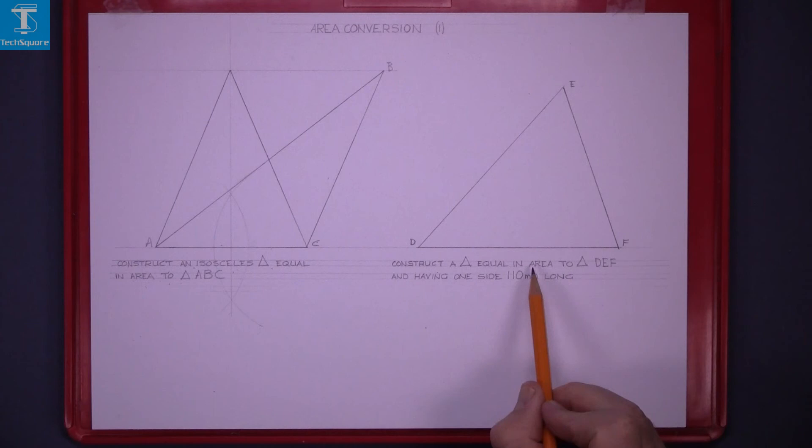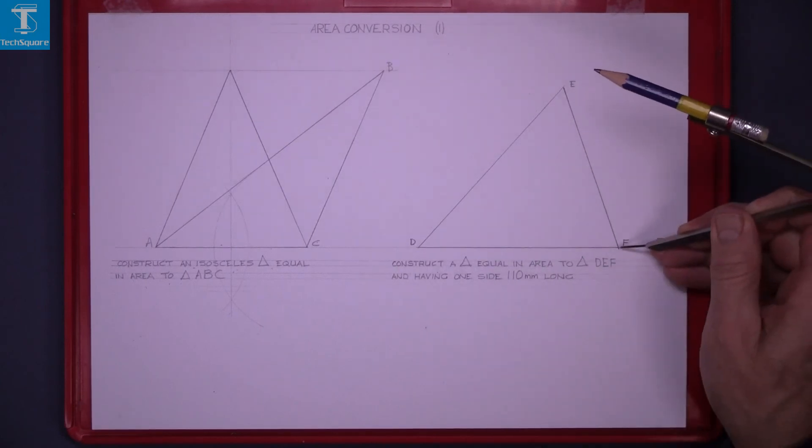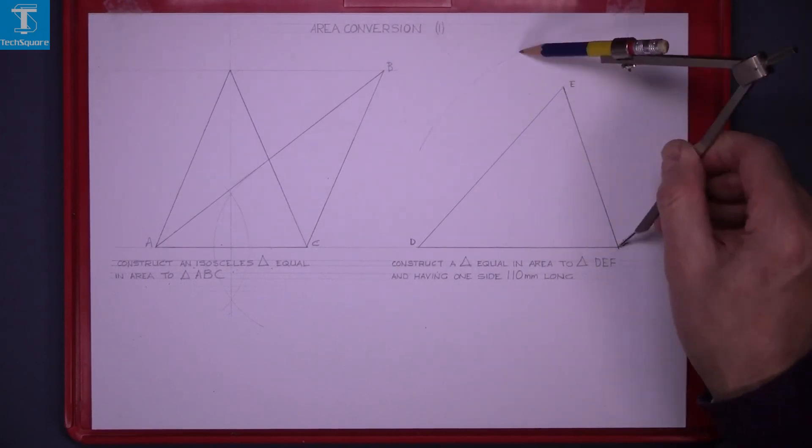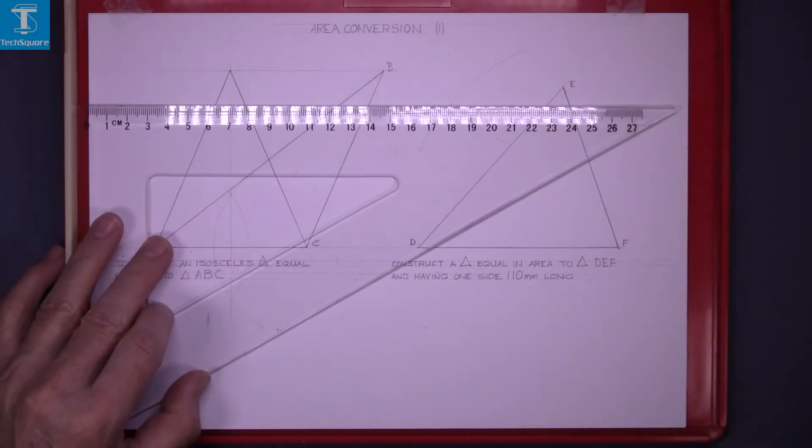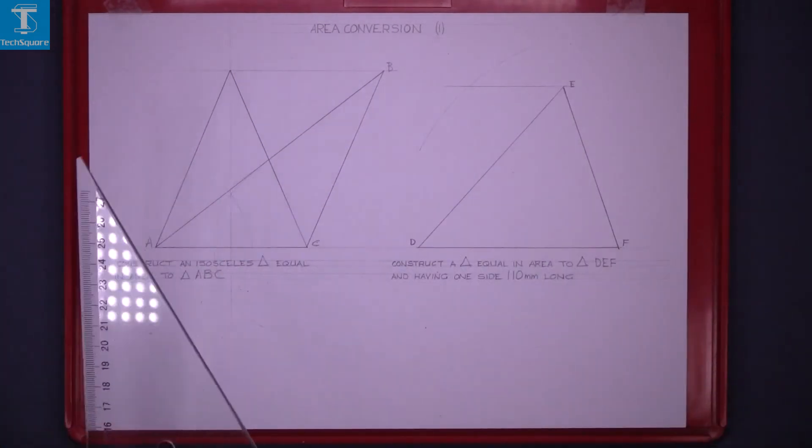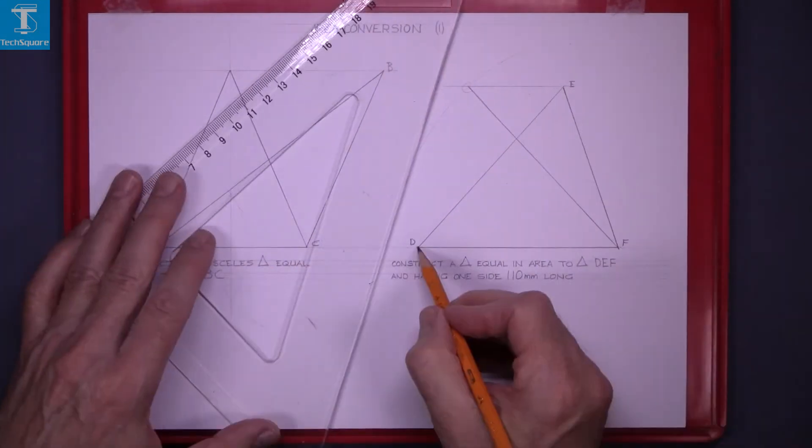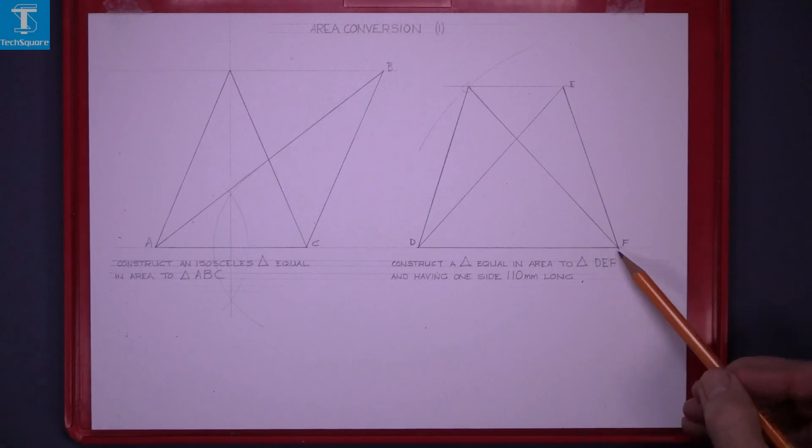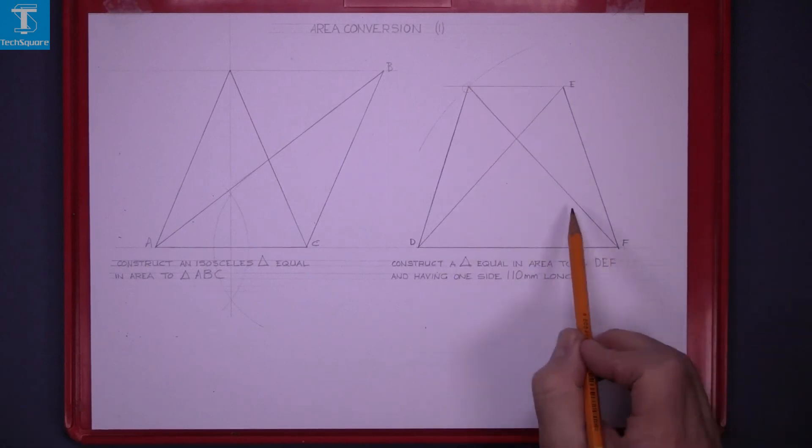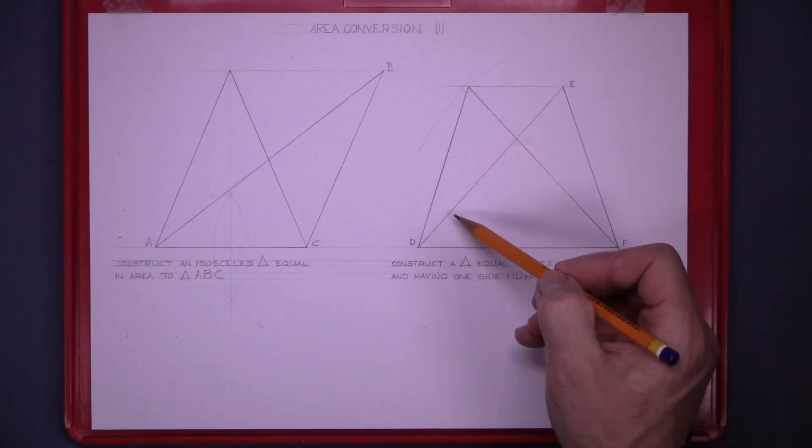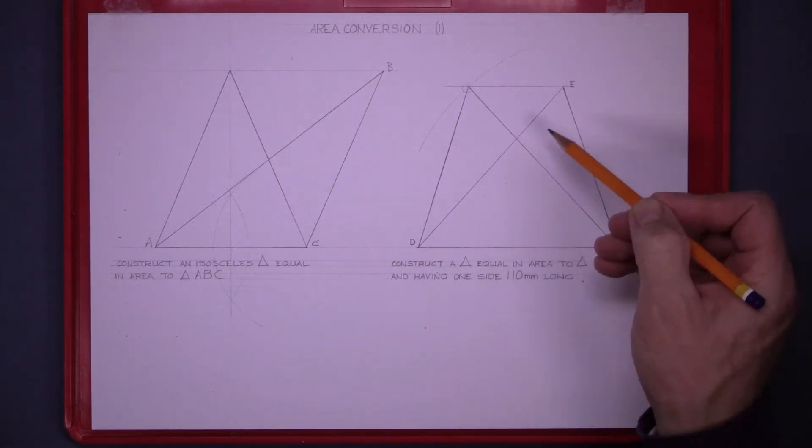Construct a triangle equal in area to triangle DEF and having one side 110 mm long. Set the compass to 110 mm. Put the point of compass in the base and draw an arc. Draw horizontally across from the top point where it intersects the arc join that back down to the base. And here we have a triangle one side 110 mm and is equal in area to the given figure DEF.